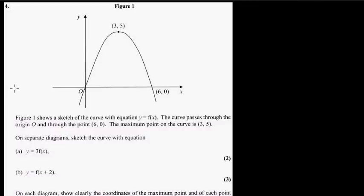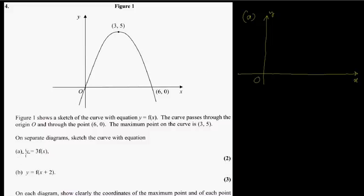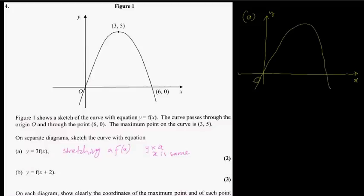Question 4 is sketching. For part a, y equals 3f(x) — this is a stretch. In the form a·f(x), you multiply the y-coordinates by a, and x stays the same. So the x-coordinates 0, 3, and 6 remain unchanged. The y-coordinate at x equals 3, which was 5, gets multiplied by 3 to give 15. So the maximum point moves to (3, 15).